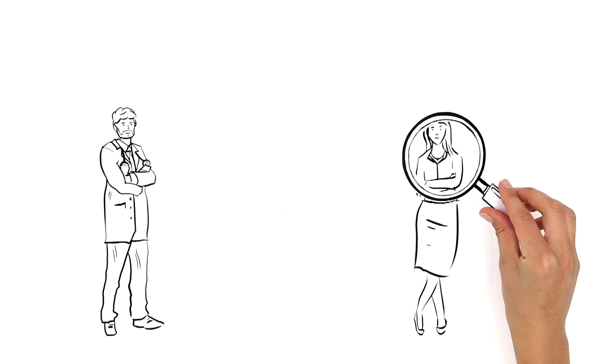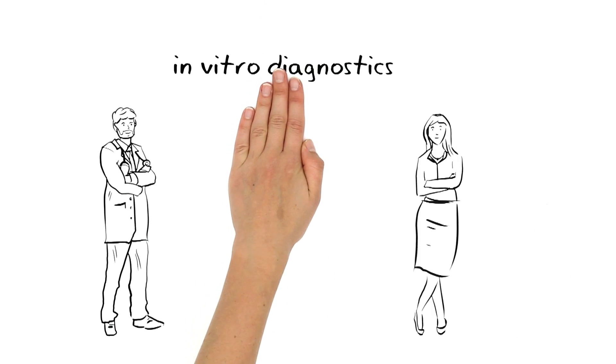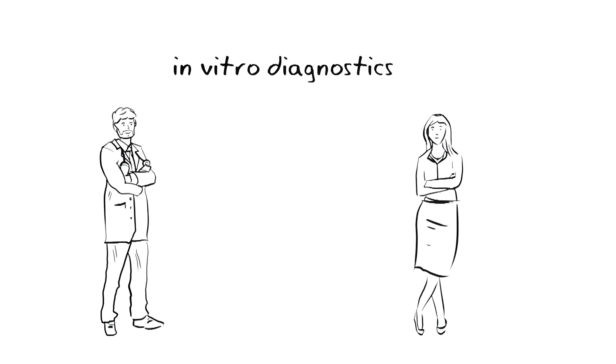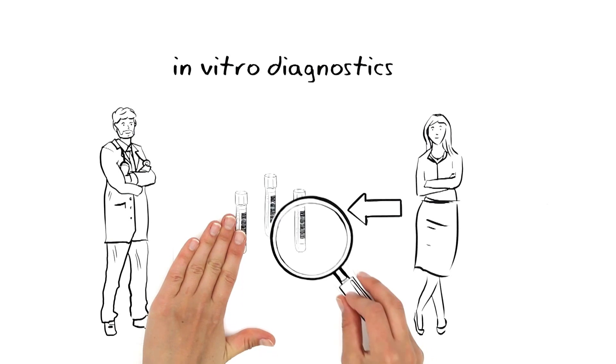To examine Diana's state of health, Dr. Sanos mainly relies on in vitro diagnostics. In vitro are tests done outside the body, analyzing samples of Diana's blood, urine or tissues, for example.